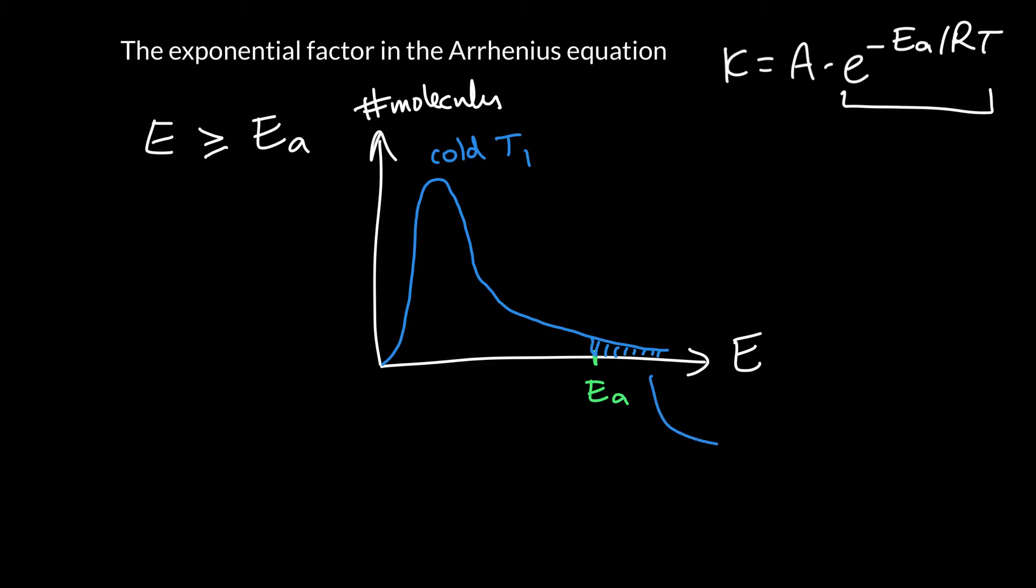And so that probability is basically e to the minus Ea over RT1.